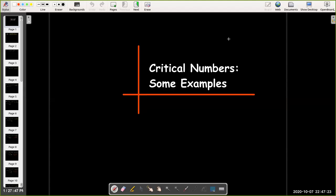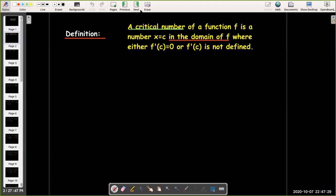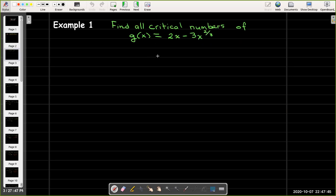In this short video, we're going to do some examples where you calculate the critical numbers of a function. Recall that a critical number of a function f is a number c in the domain of f, where either f prime of c equals zero or f prime of c is not defined.